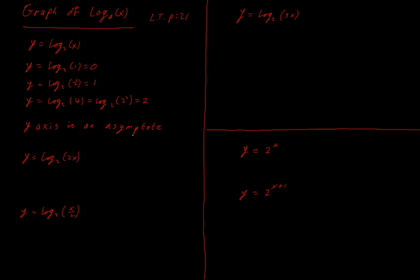I'll note right now, before I show it to you, that the y-axis is going to be a vertical asymptote for logs. Any non-complicated log — anything that looks basically like this with a different base number — is going to have the y-axis as an asymptote. We're going to see that we can shift the log function around, but any simple log function like this will have the y-axis as an asymptote. The brightness of the screen is going to change significantly in a moment.